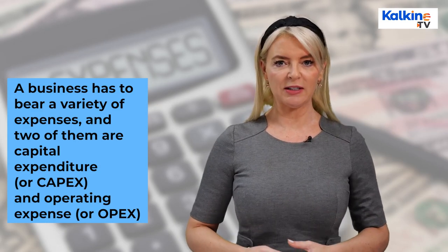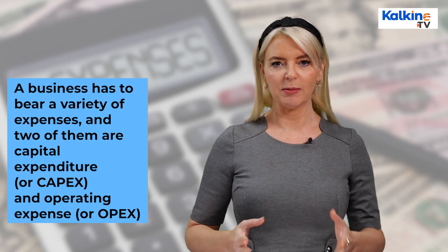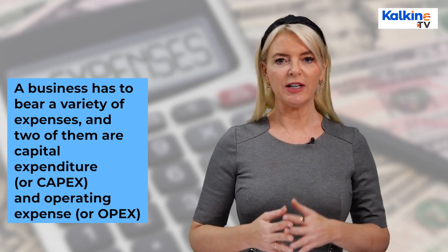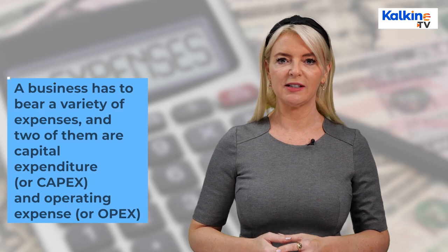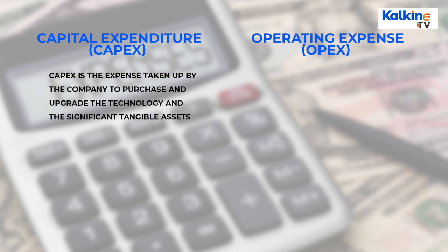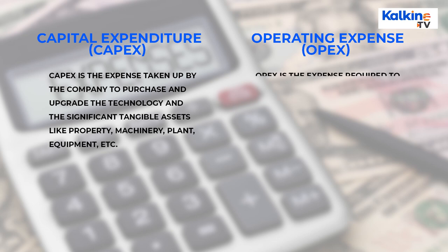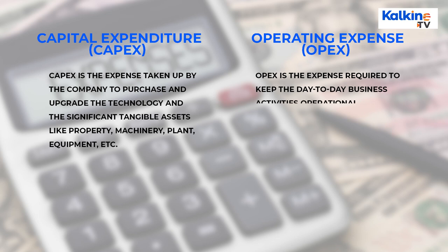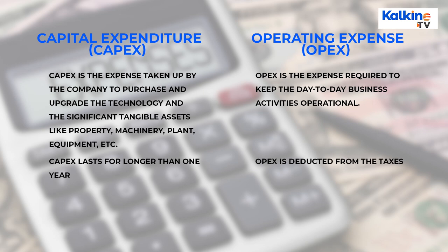What is the difference between capital expenditure and operating expenditure? A business bears a variety of expenses — two of them are capital expenditure (CapEx) and operating expense (OPEX). CapEx is the expense taken up by the company to purchase and upgrade technology and significant tangible assets such as property, machinery, plant, and equipment. OPEX is the expense required to keep day-to-day business activities operational.